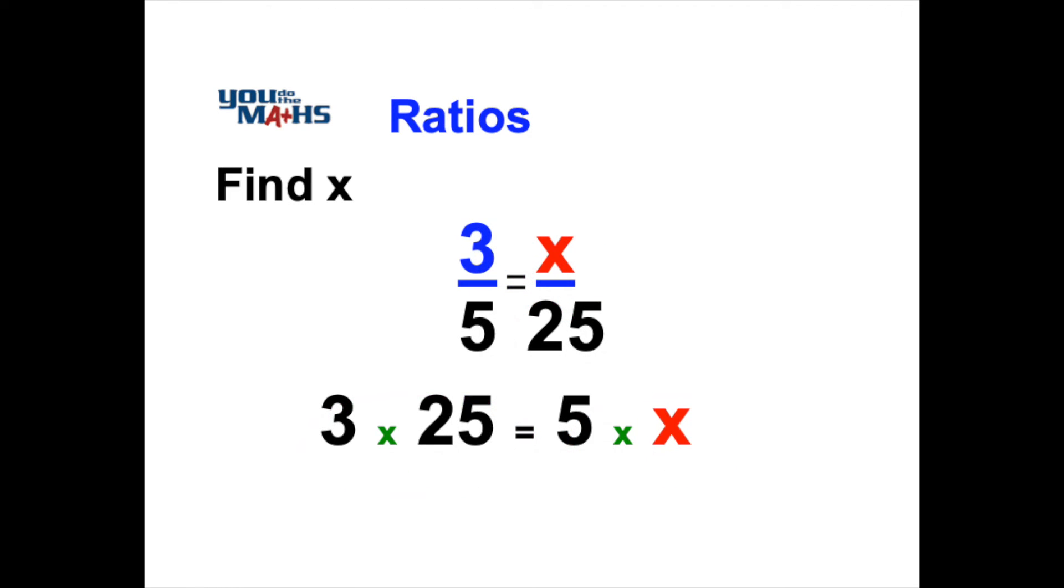So using cross multiplication we get that 3 multiplied by 25 is 75 and 5 multiplied by x is 5x.